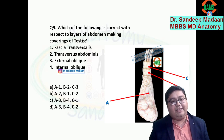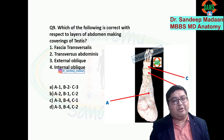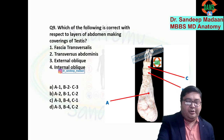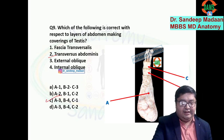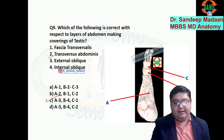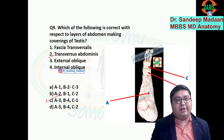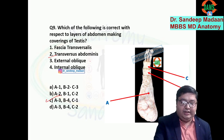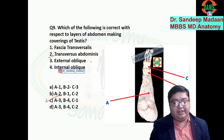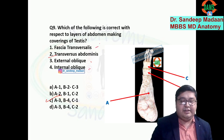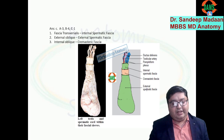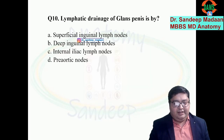One important point: transversus abdominis does not form any cover for the spermatic cord. Looking at the choices: A — external spermatic fascia is given by external oblique; B — cremasteric fascia is given by internal oblique; and the internal spermatic fascia is given by fascia transversalis. Transversus abdominis contributes no layer, so answer C is correct.